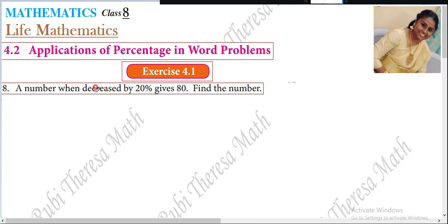A number when decreased by 20% gives 80. Find the number. Let a number be x. Because we don't know the number, we will assign one variable.